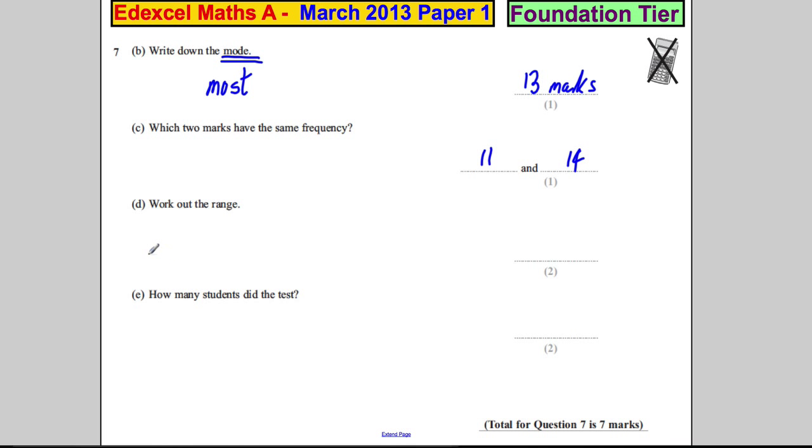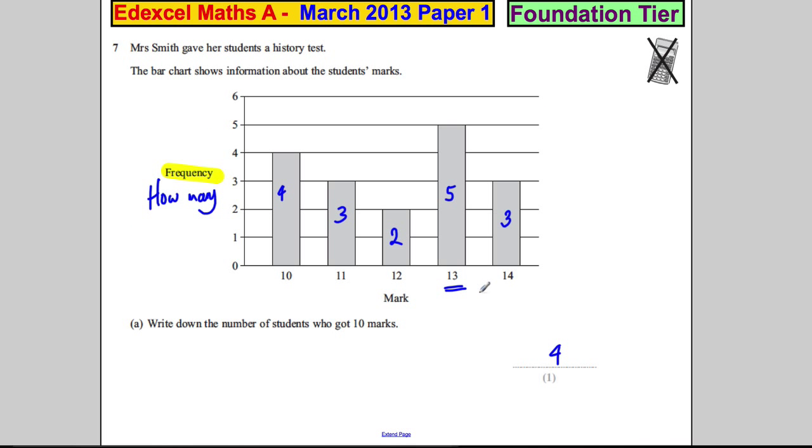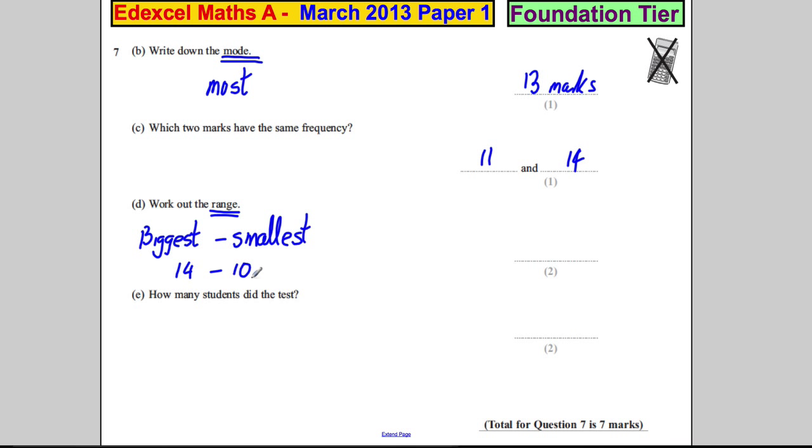Work out the range. Now, the range is simply the biggest subtract the smallest. It's the biggest result take away the smallest result. So, therefore, the biggest result, the biggest mark is 14 and you subtract 10, which is 4.